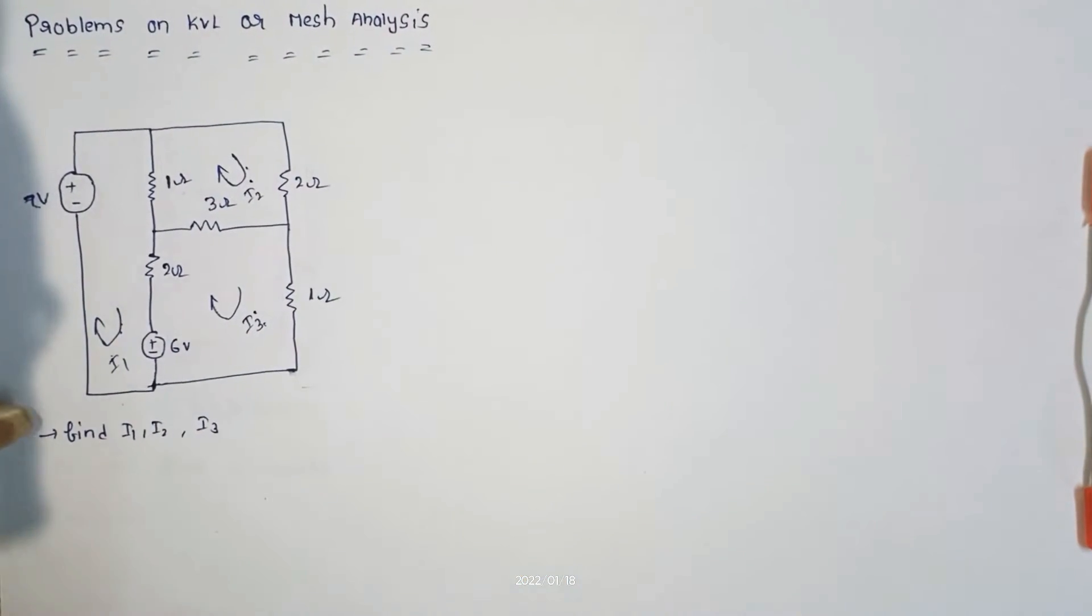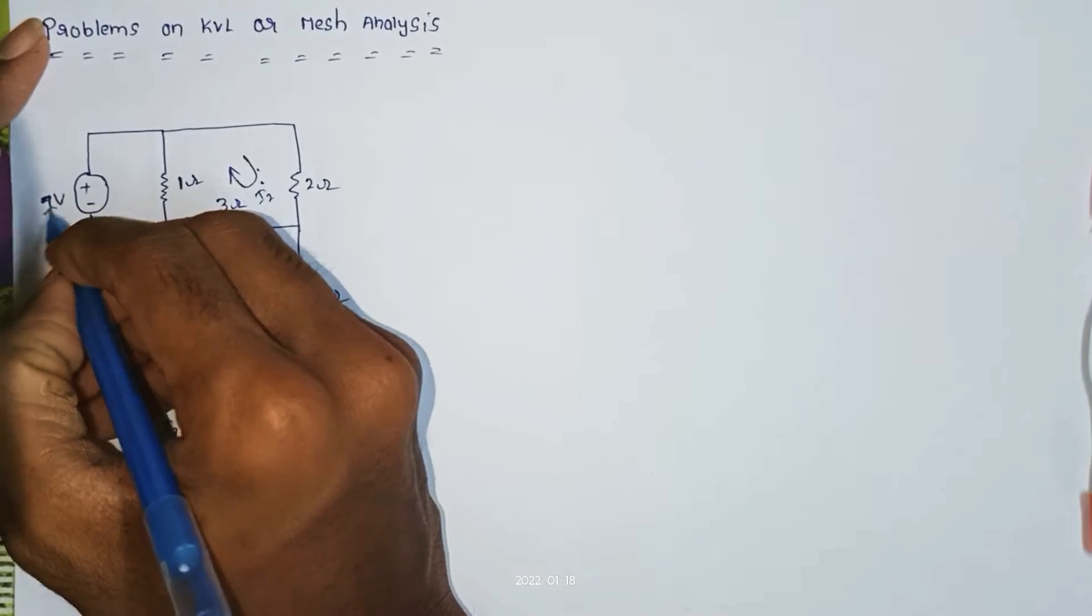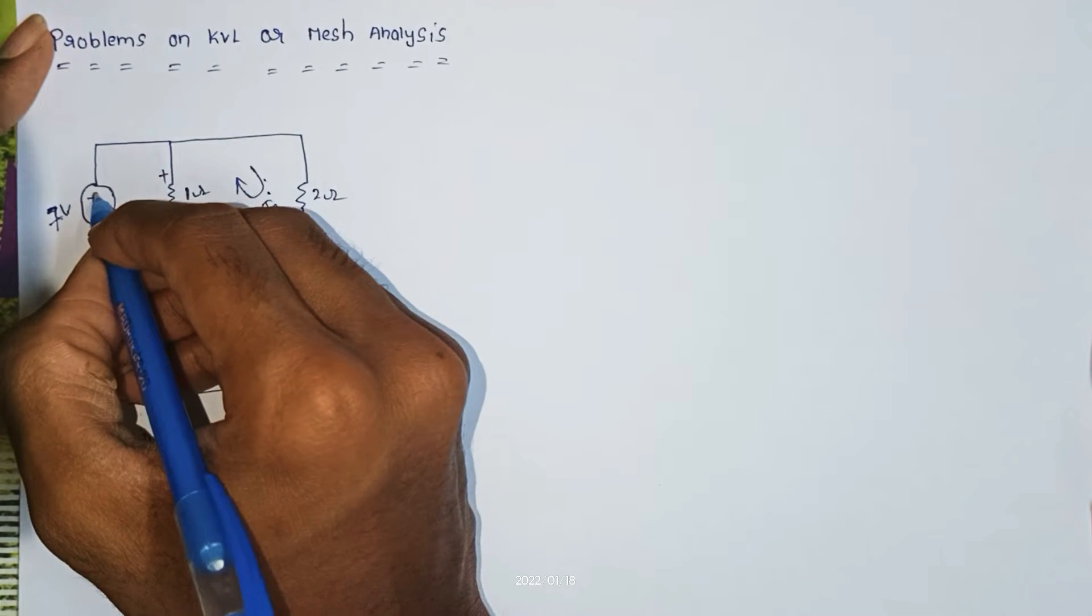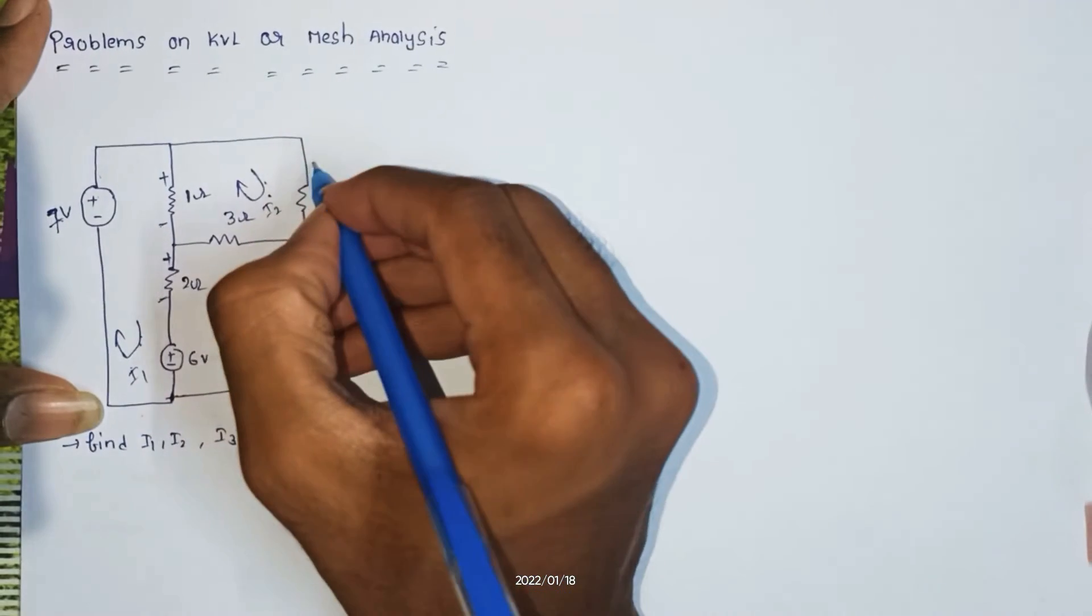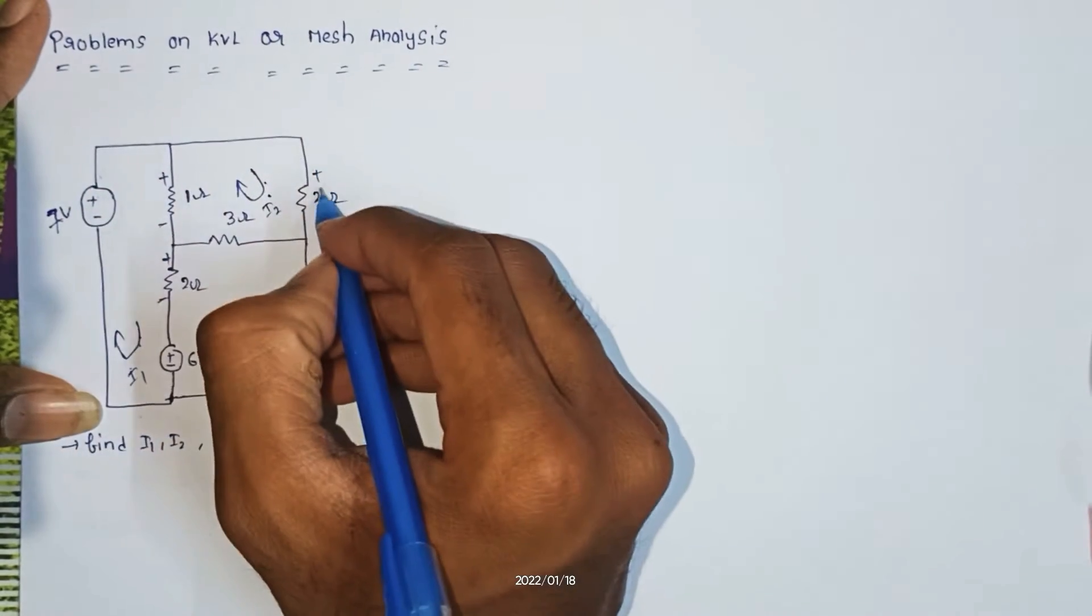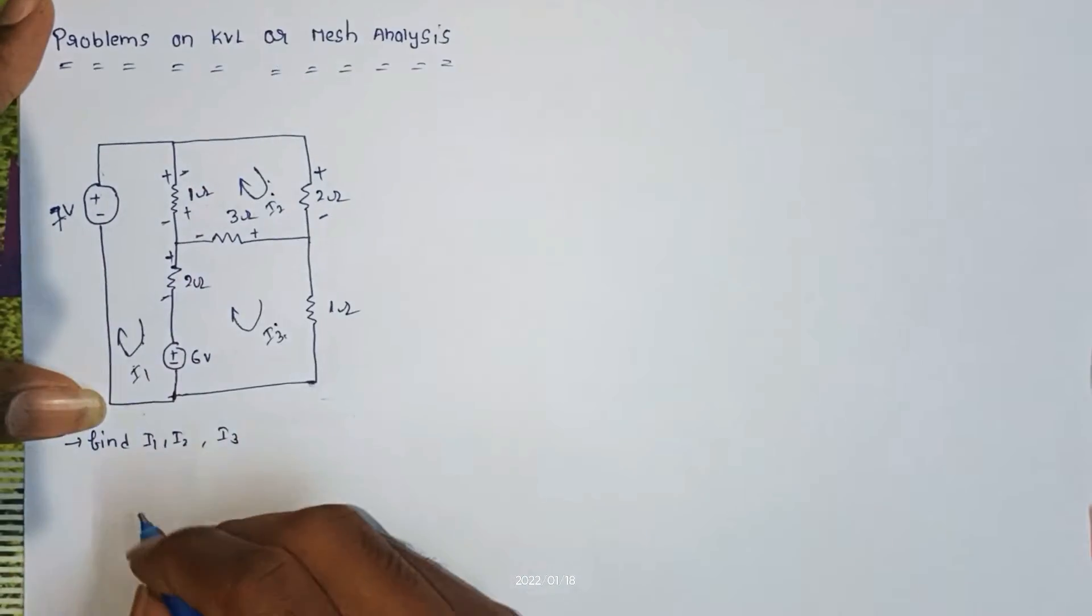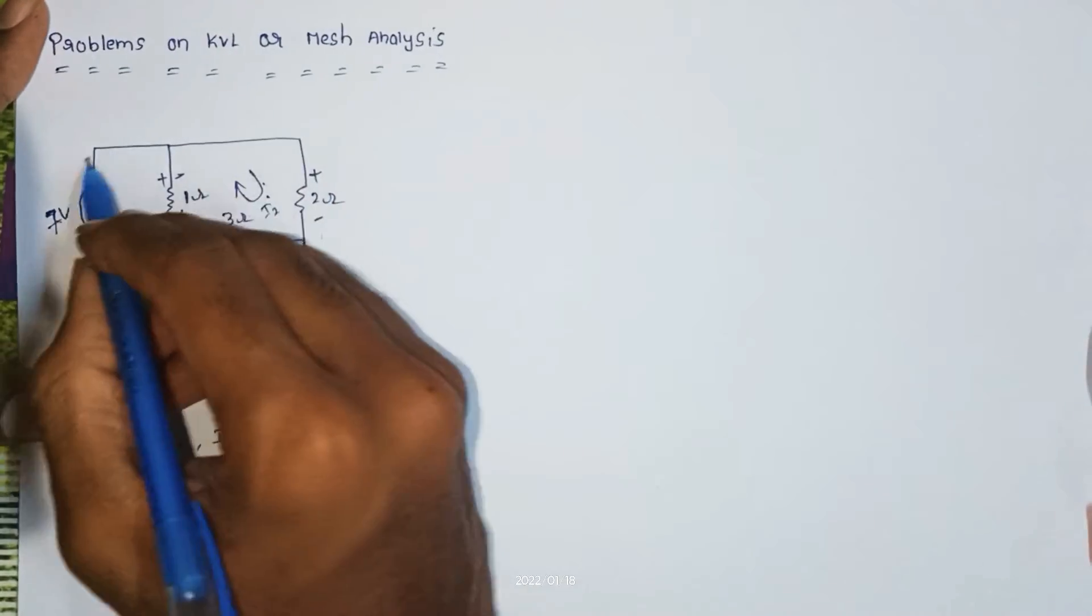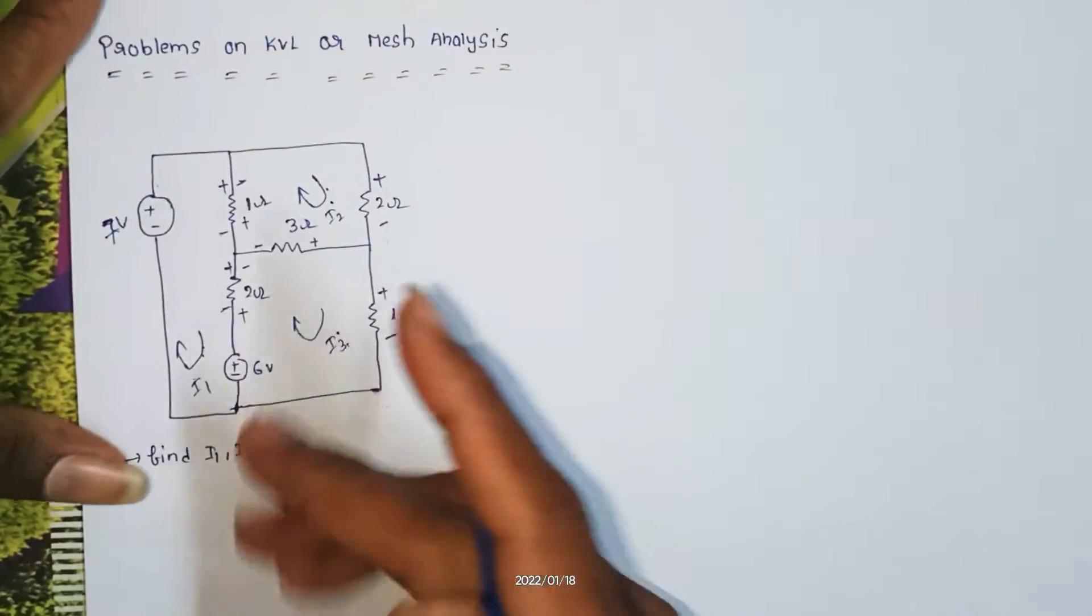We take I1, I2, and I3 in these directions. We have three loops. Now we identify positive and negative terminals and symbols. First we look at loop one, identifying plus and minus terminals. Then we see loop two, marking plus and minus. Next loop three also gets plus minus symbols.